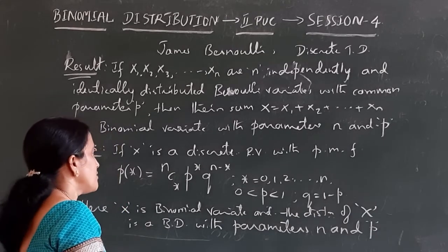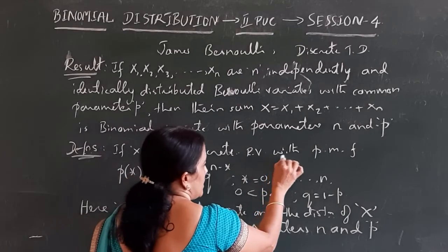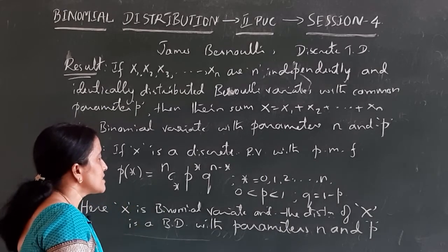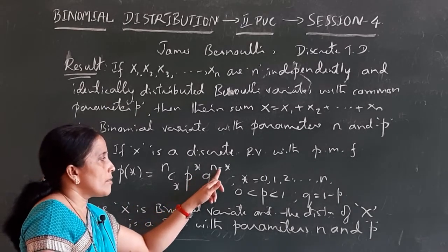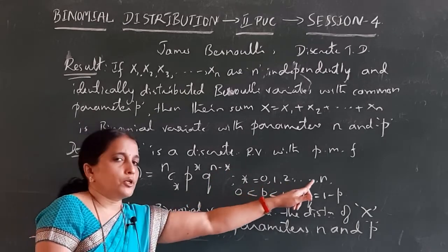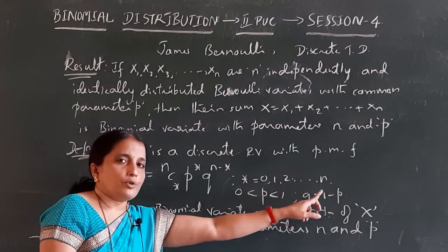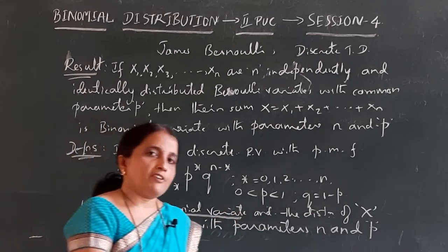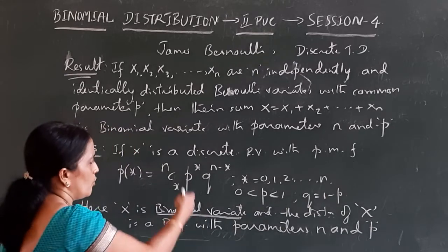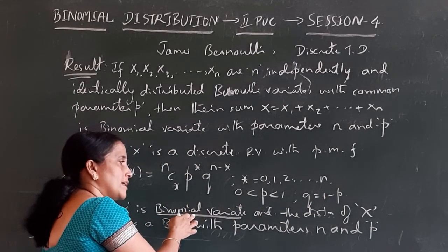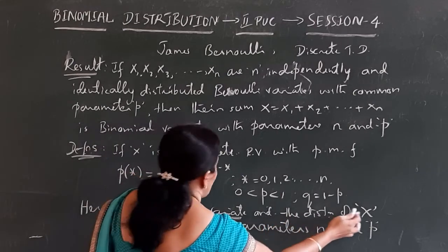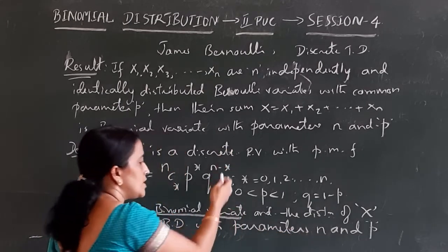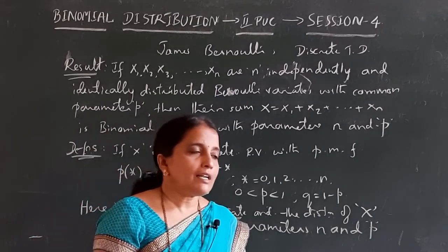If the question asks to define a binomial variate, write: if x is a discrete random variable with probability mass function p(x) = nCx · p^x · q^(n−x), x = 0, 1, 2, ..., n, 0 < p < 1, q = 1 − p, then x is a binomial variate. If asked to define a binomial distribution, add the statement: the distribution of x is a binomial distribution with parameters n and p.